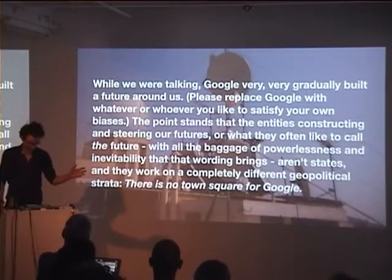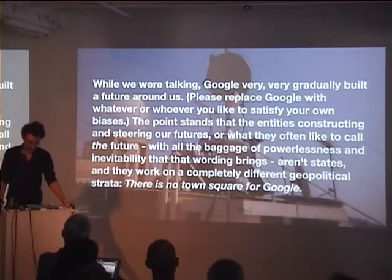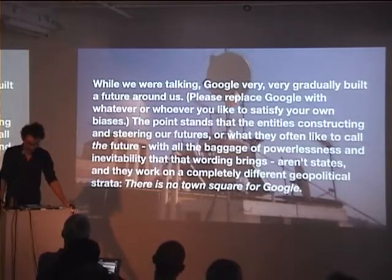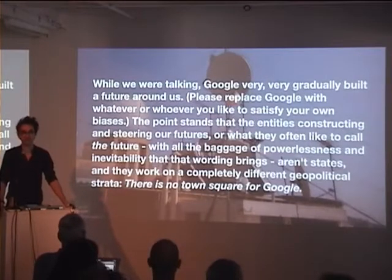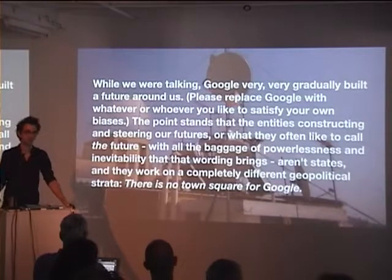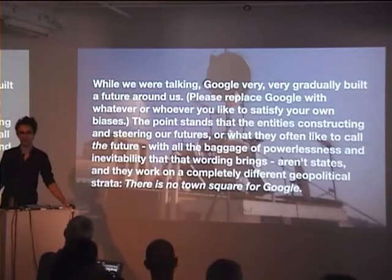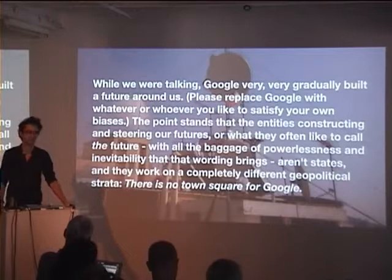This is perhaps the central quote of the essay: while we were talking, Google very gradually built a future around us — replace Google with whoever satisfies your own biases. The point stands that the entities constructing and steering our futures aren't states; they work on completely different geopolitical strata. There is no town square for Google. Fundamentally, we've lost a commons because of the way we interact with technology, and it has muted our political agency in society. I propose what a new commons might possibly look like — and I've come to realize that commons probably won't ever exist, but it's still an interesting framing device.